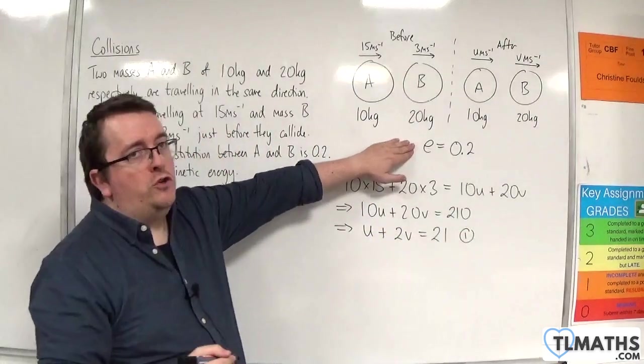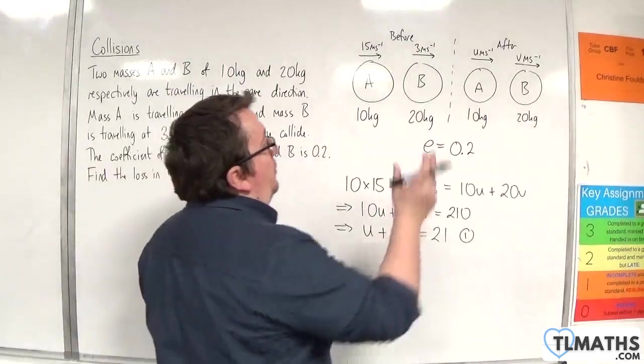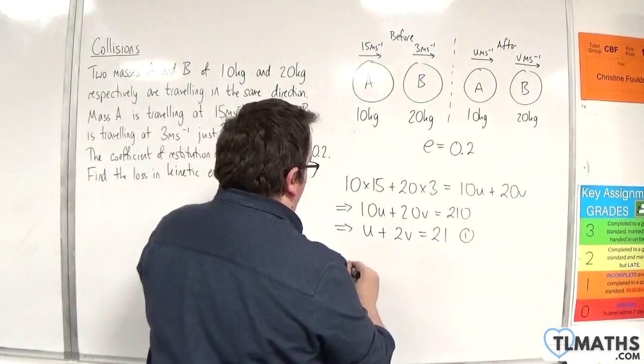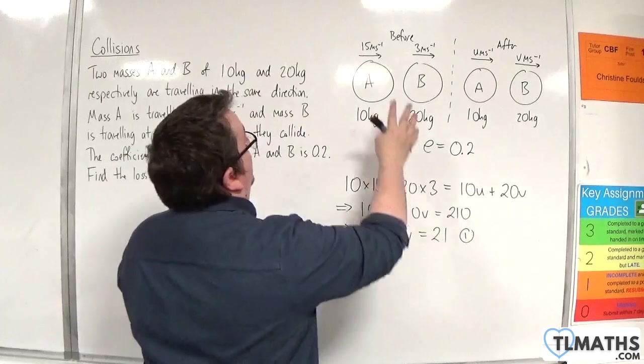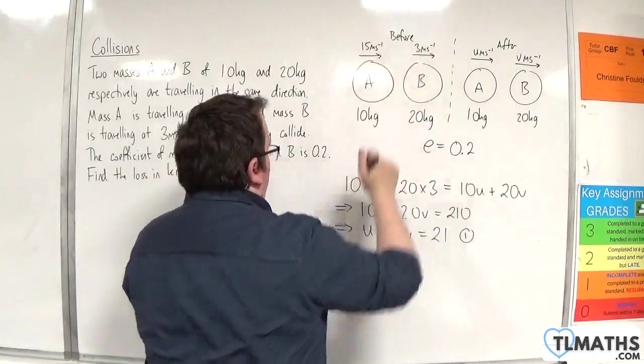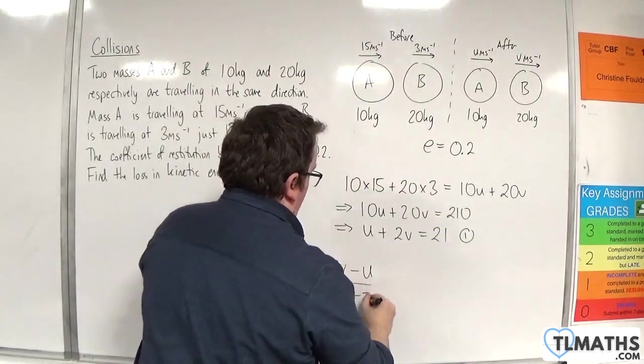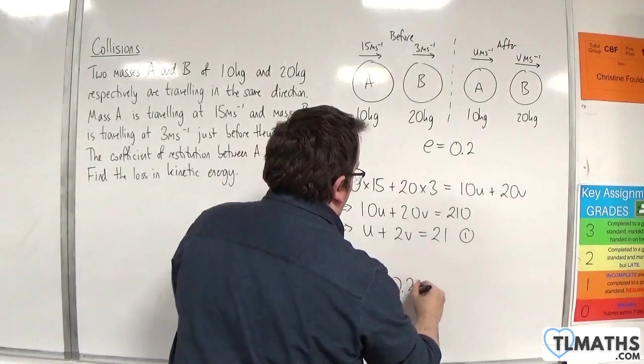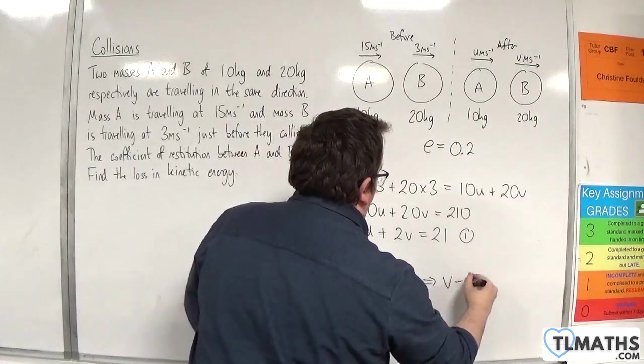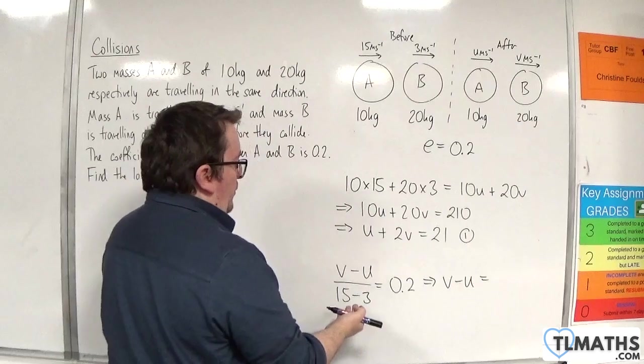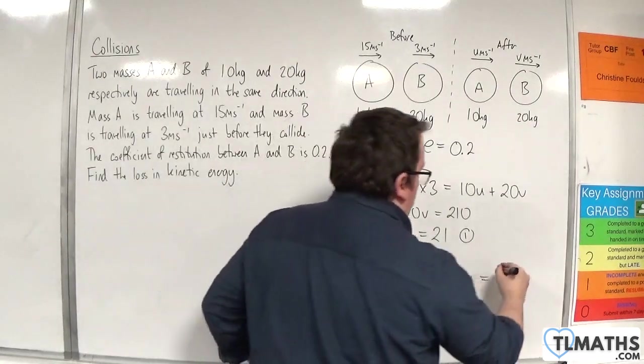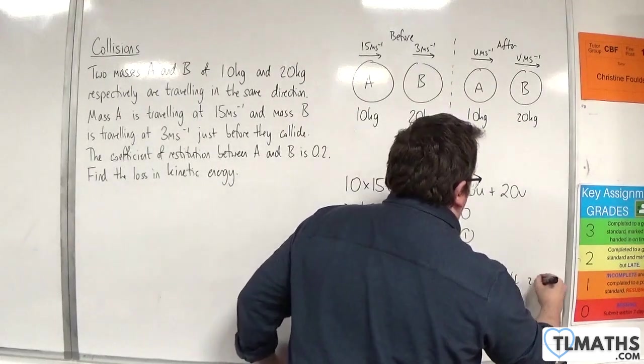Now the calculation for the coefficient of restitution is the speed of separation, which will be V minus U, divided by the speed of approach, which is 15 take away 3. And that's going to be equal to 0.2. So V minus U is going to be equal to 12 times 0.2, so 2.4. And that's equation number 2.